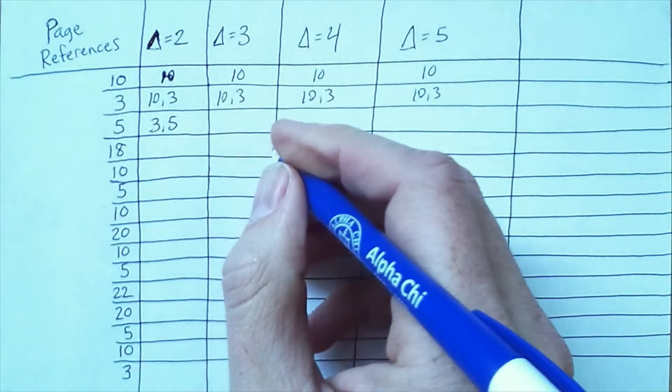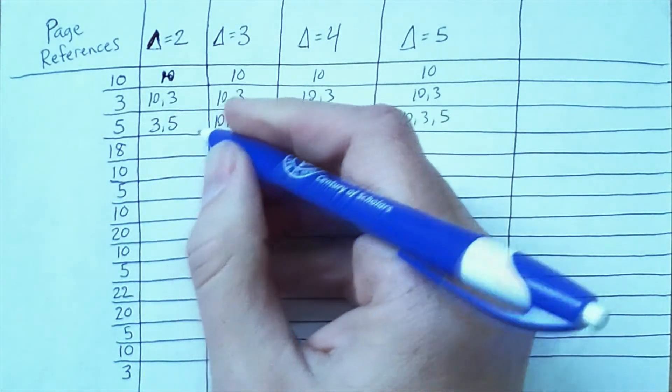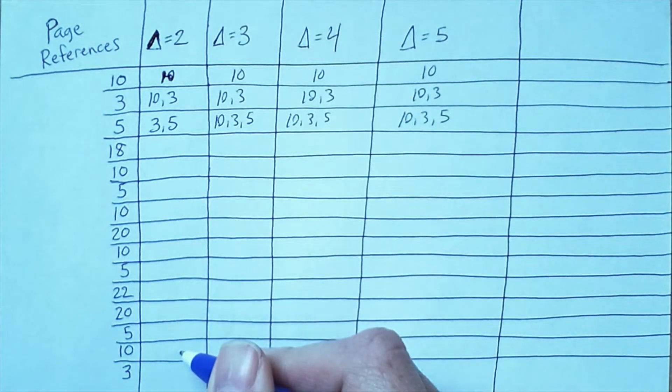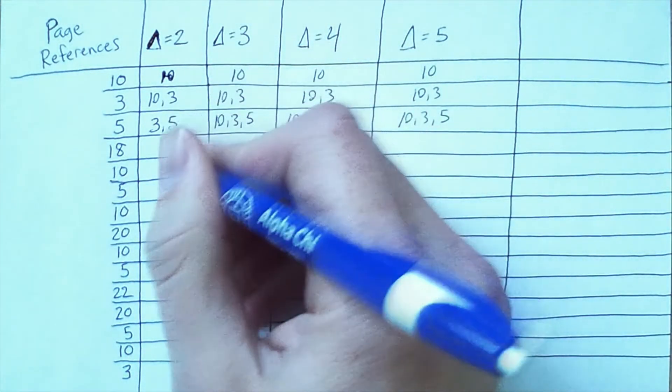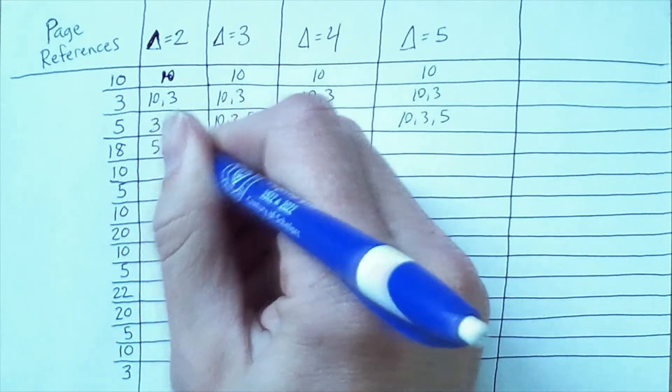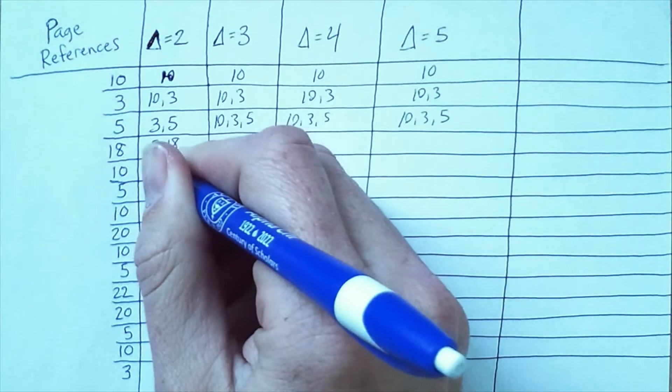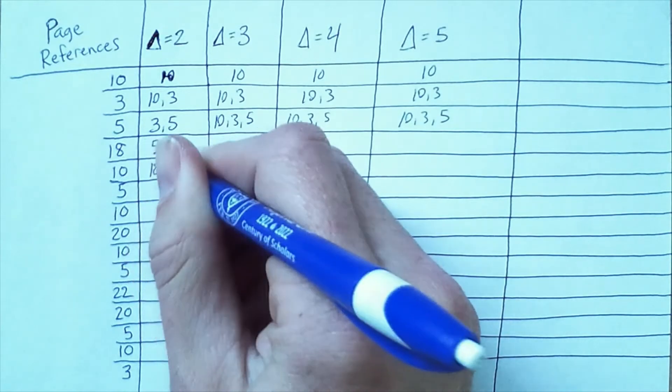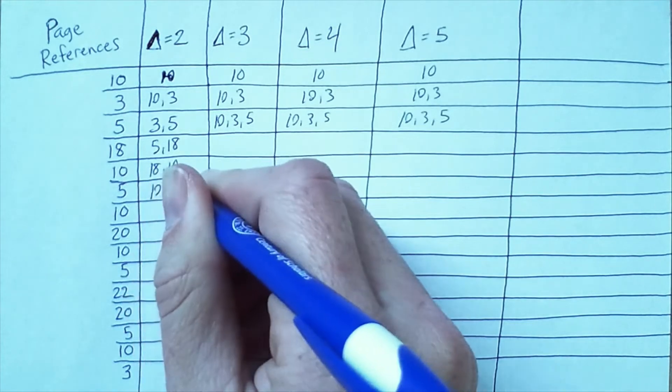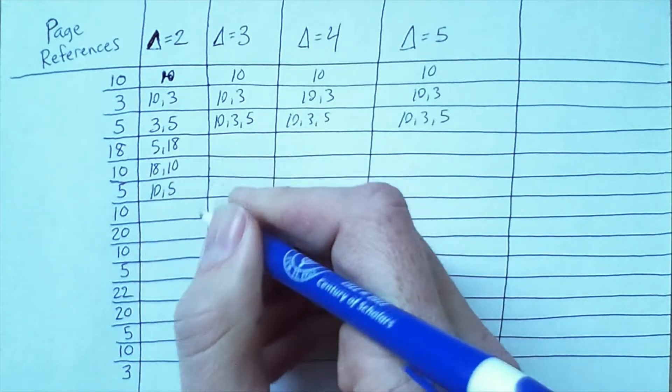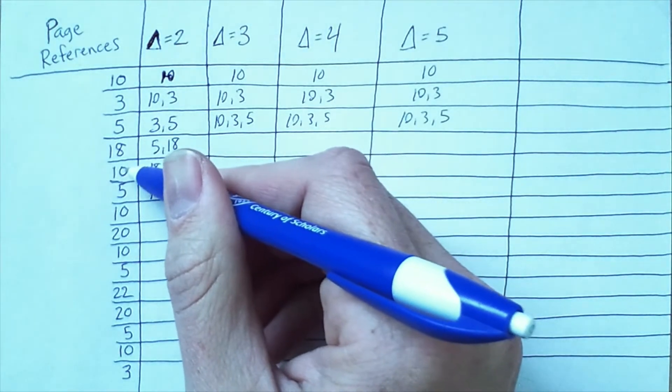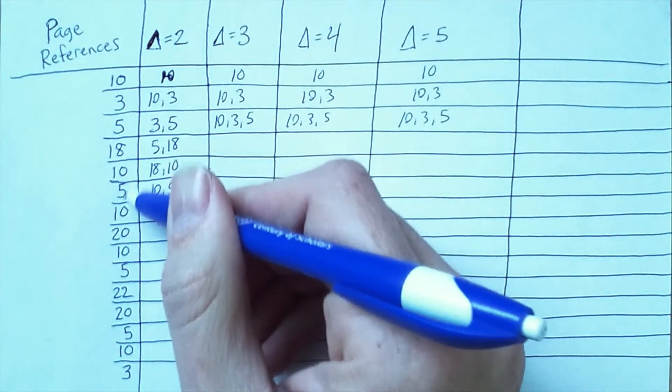And so we'll still have 10 here because the size of this set is 2, or rather the delta is 2, meaning the maximum possible size is 2. And because all of these delta values are larger, we'll have 10 and then 3 for each of these as well.